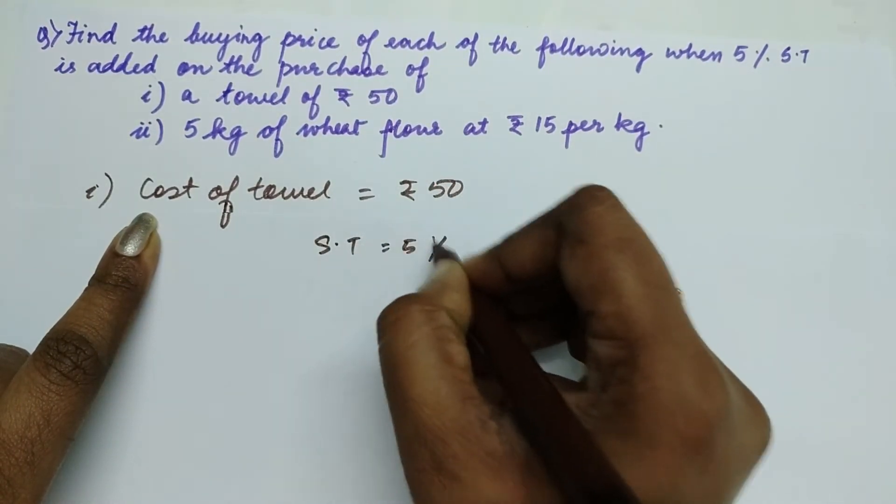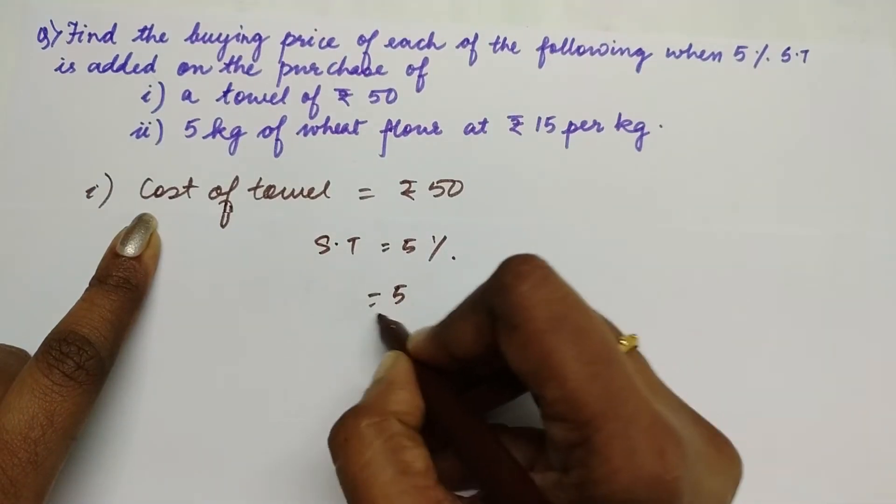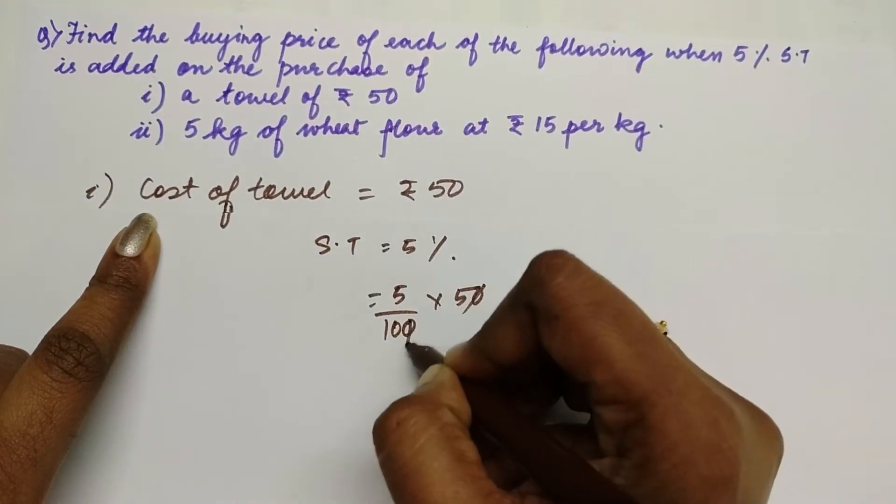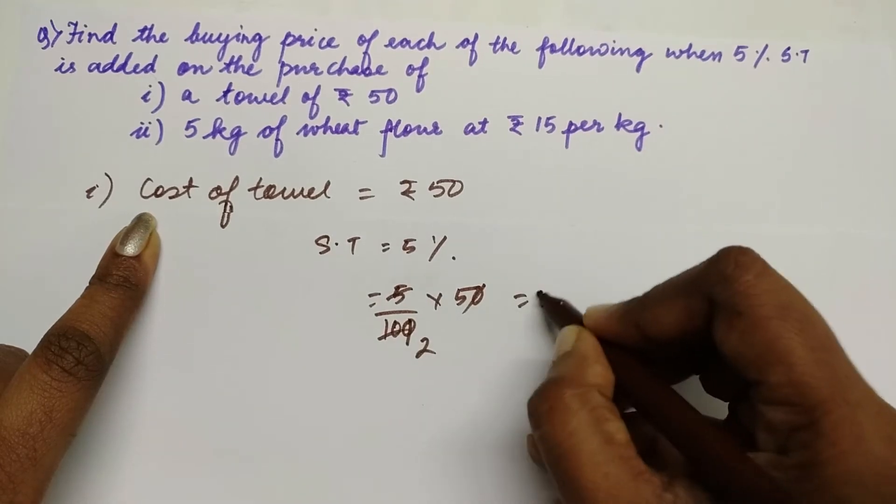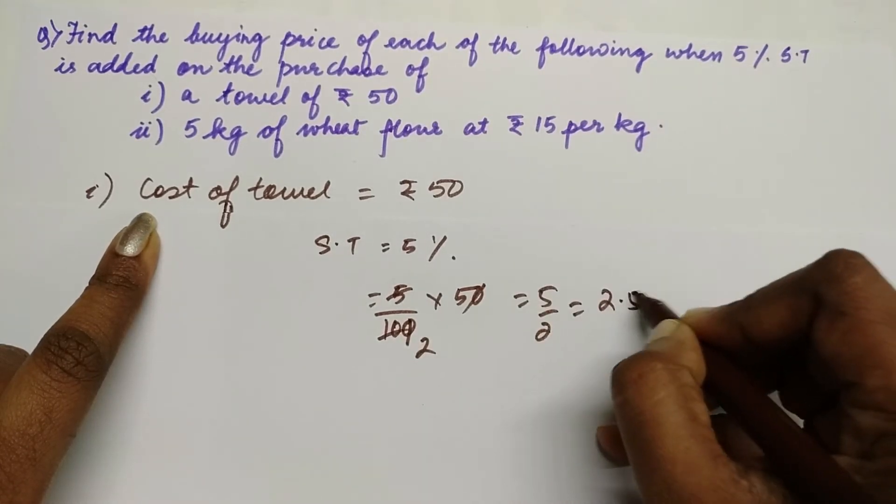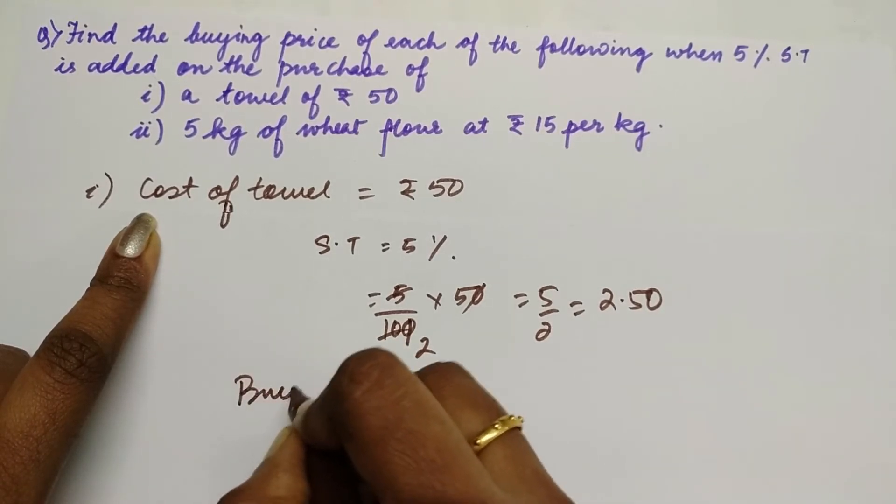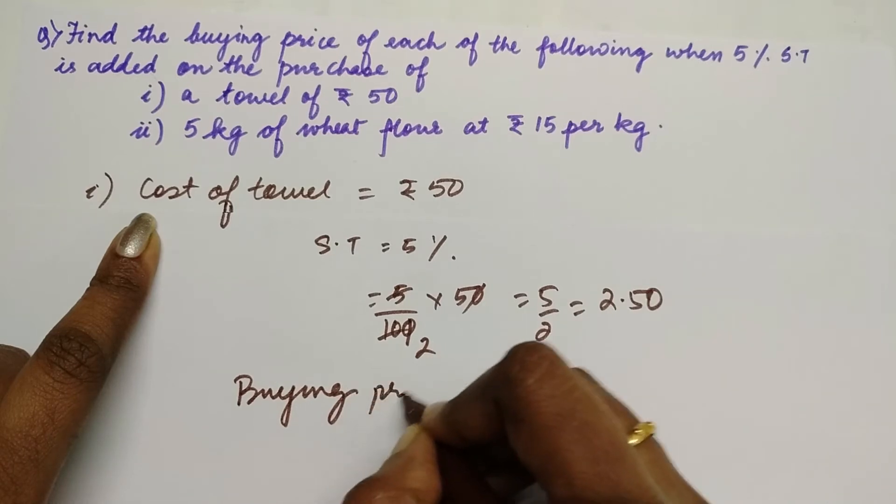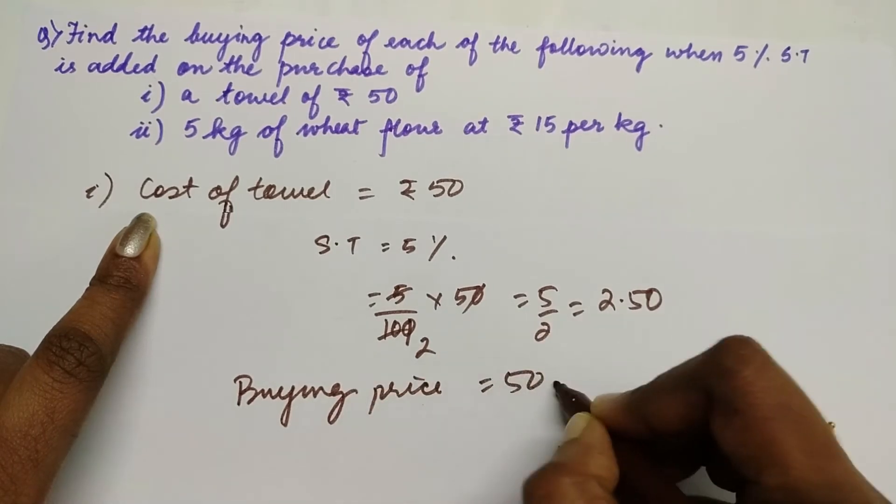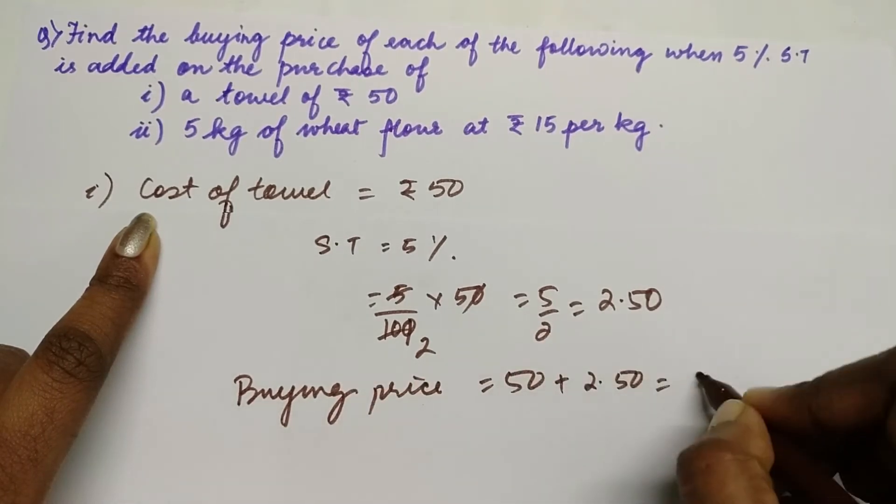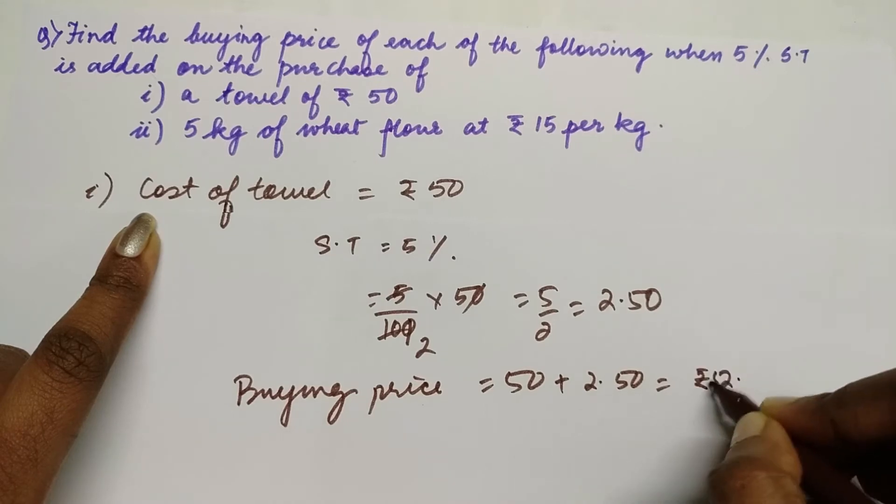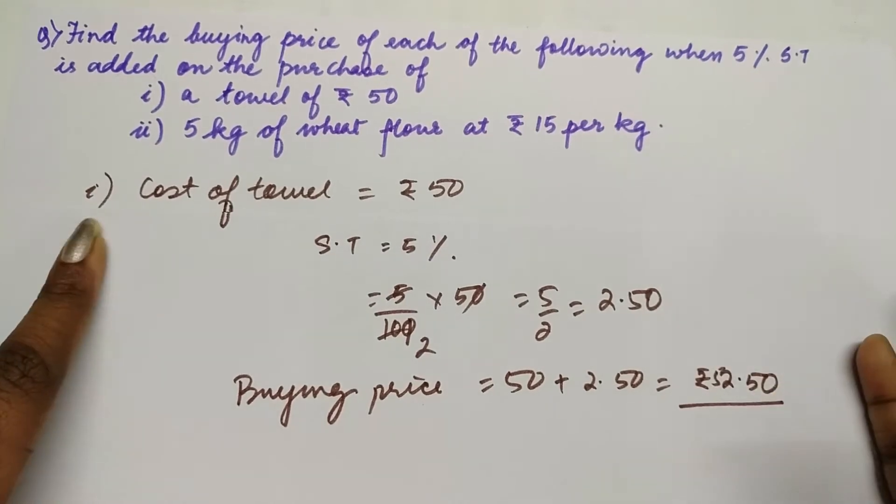So we are going to calculate 5%, that is 5 by 100 of ₹50, that is 5 by 2, which equals ₹2.50. And the cost that you are going to pay, or the buying price as we can call it, will be ₹50 plus ₹2.50, that is ₹52.50. This is the amount you are going to pay after giving a tax of 5%.